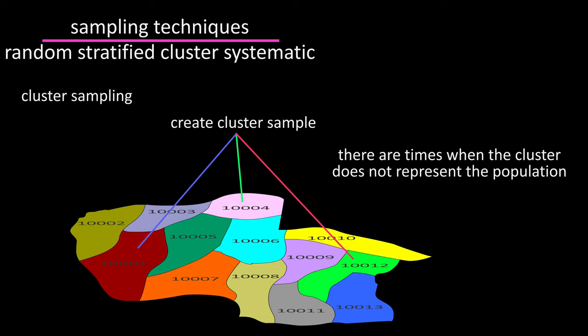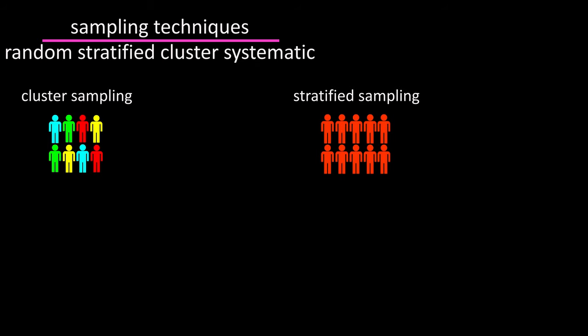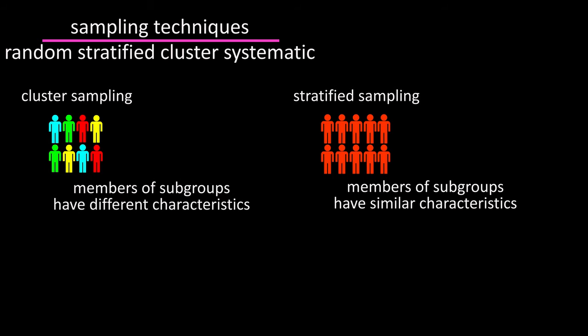However, there are times when the cluster does not represent the population. A little note: the main difference between cluster sampling and stratified sampling is that subgroups in the stratified sample have similar characteristics, and the subgroups or clusters in the cluster sample are intended to vary in characteristics.